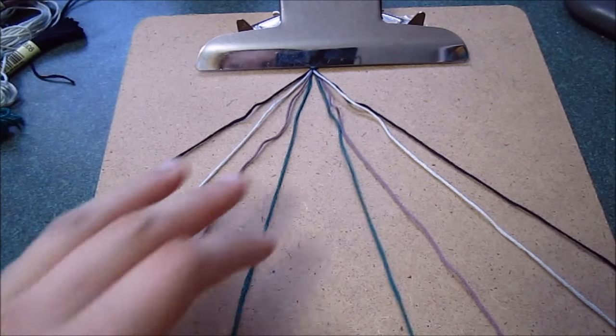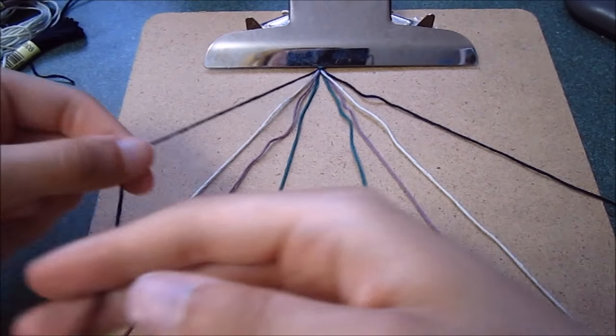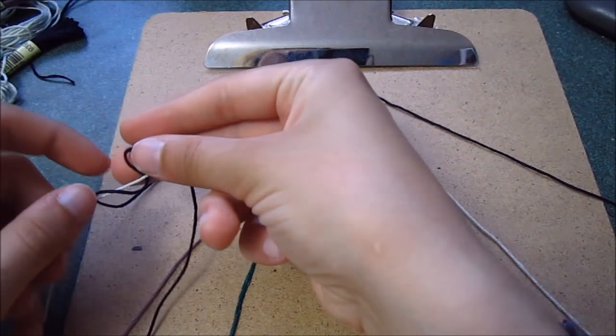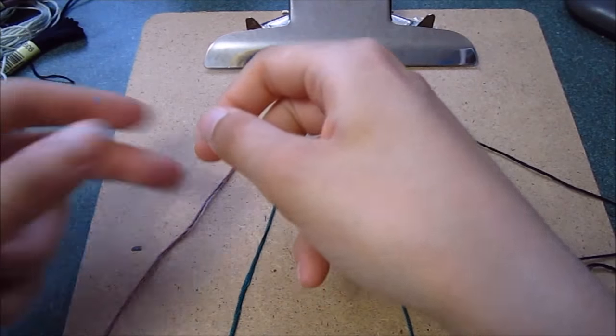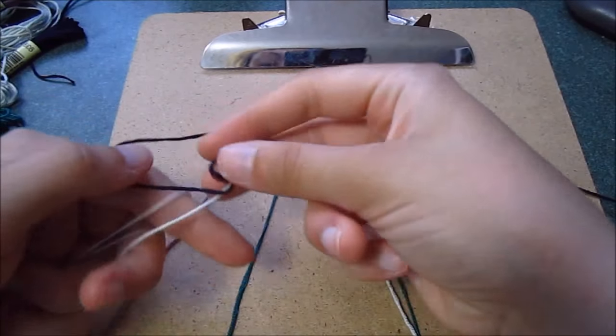Once your strings are laid out and mirrored, then you're going to take the first string on the left and tie a forward knot. Now remember to tie this forward knot twice with the first string and continue until you reach the middle of the bracelet.